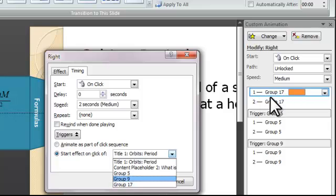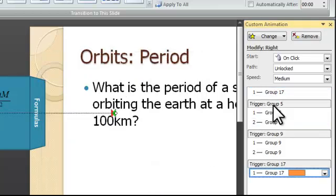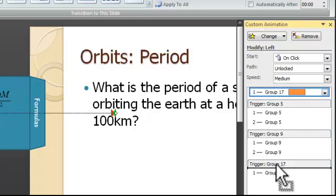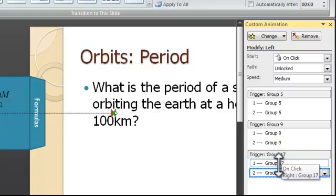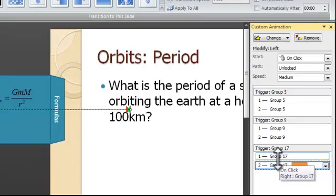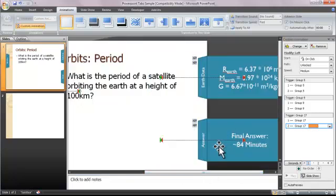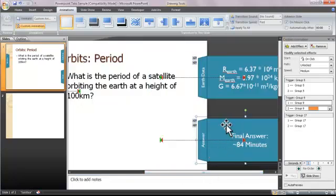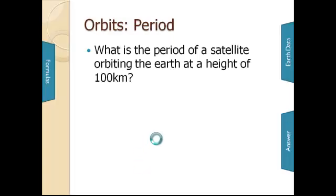As you can see over here, that's called group 17. Now, both of those things are under the trigger group 17, and so those will only work if I'm clicking on group 17. If I click on group 9, then group 9, which happens to be the answer tab. If I click on group 5, then that would be the Earth Data tab. And now if I run my program, or run the PowerPoint.